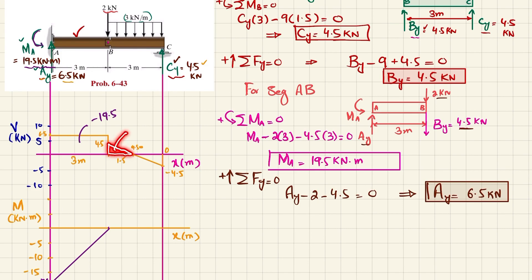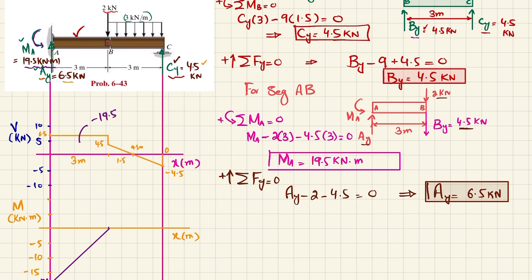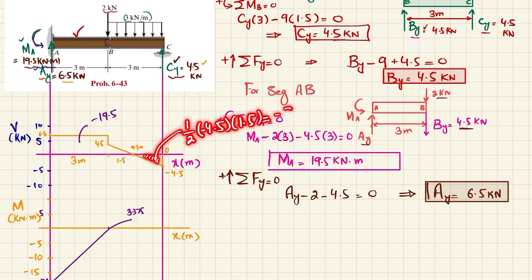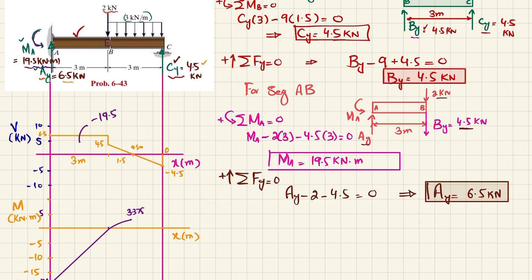The second area under the shear force diagram is the triangular area: ½ × 4.5 × 1.5 = 3.375, so 0 + 3.375 = 3.375 at the midpoint. The shear is a first-degree decreasing line, so the bending moment is a second-degree curve. The third area is negative: ½ × (−4.5) × 1.5 = −3.375, so 3.375 − 3.375 = 0 at point C. This is also a second-degree curve sloping clockwise.